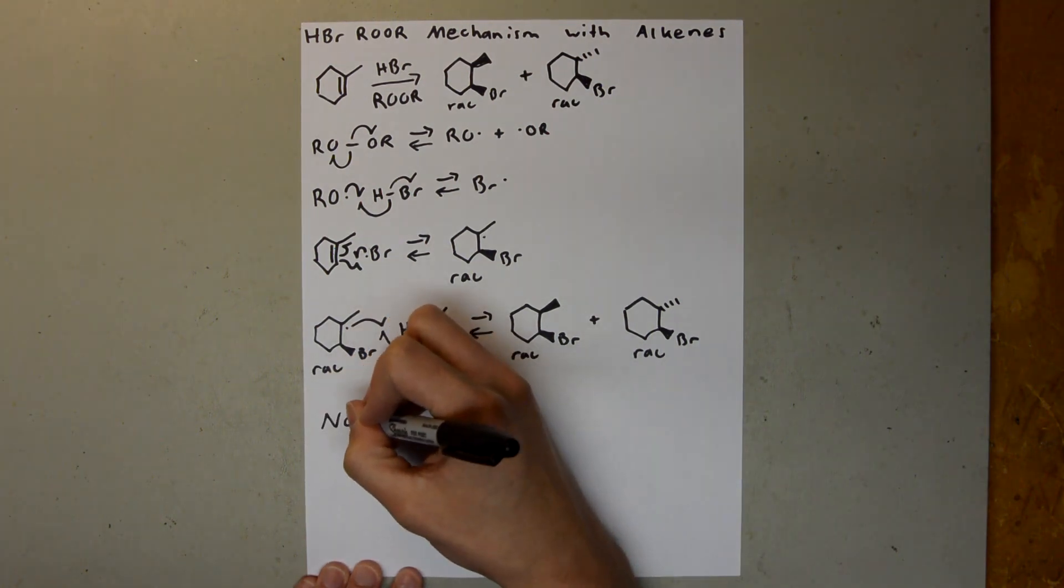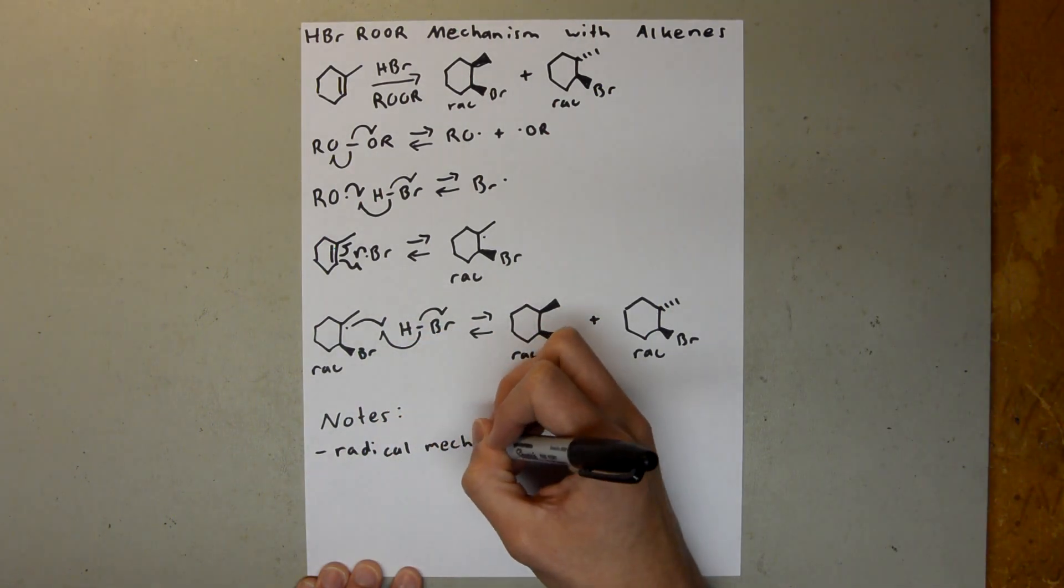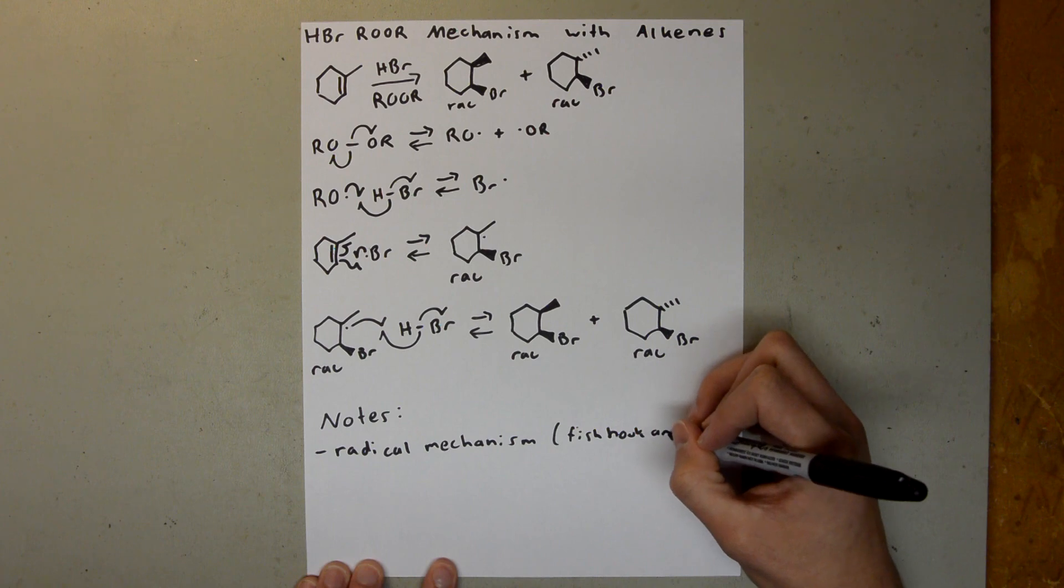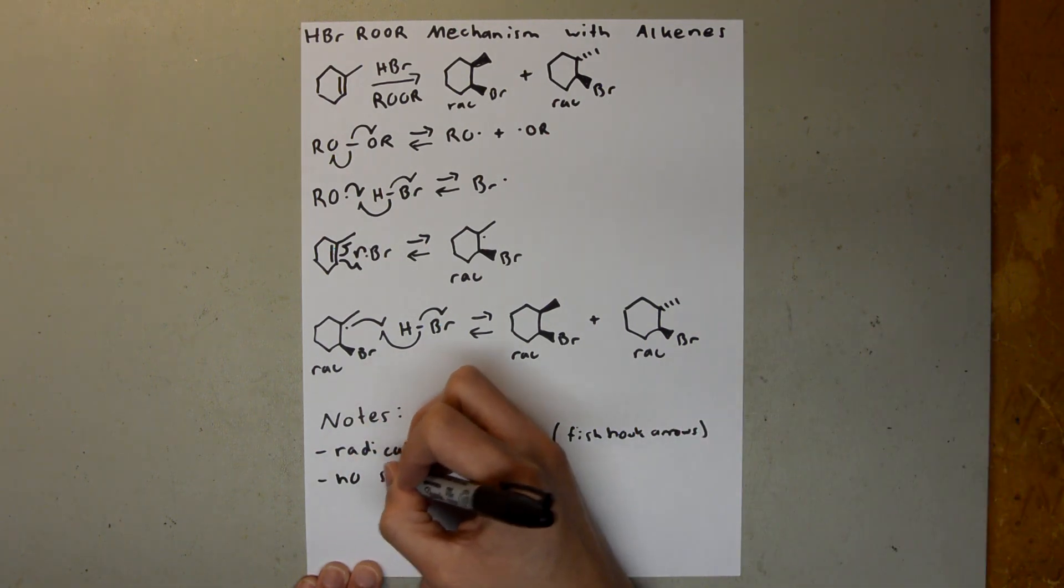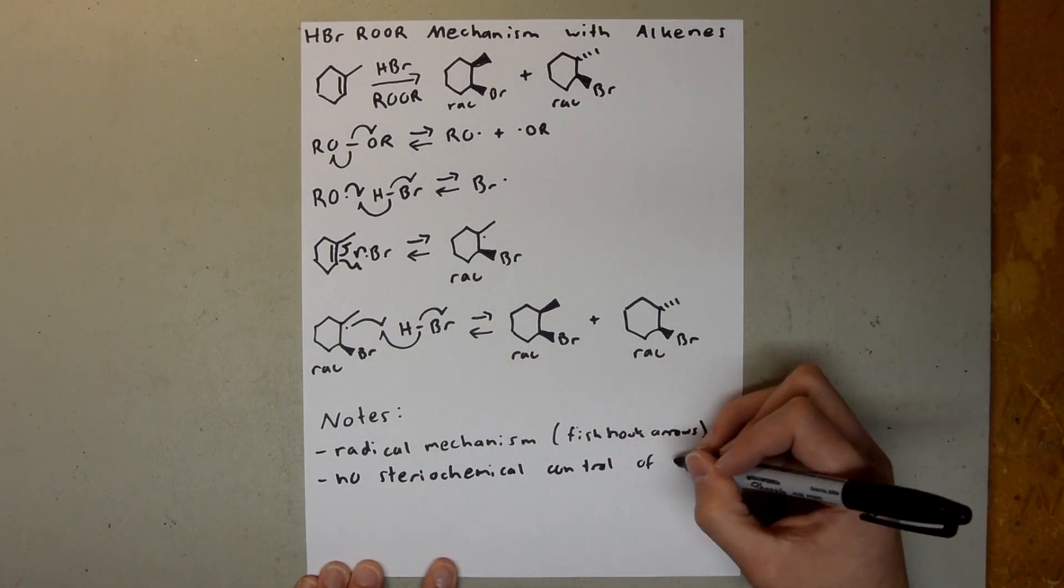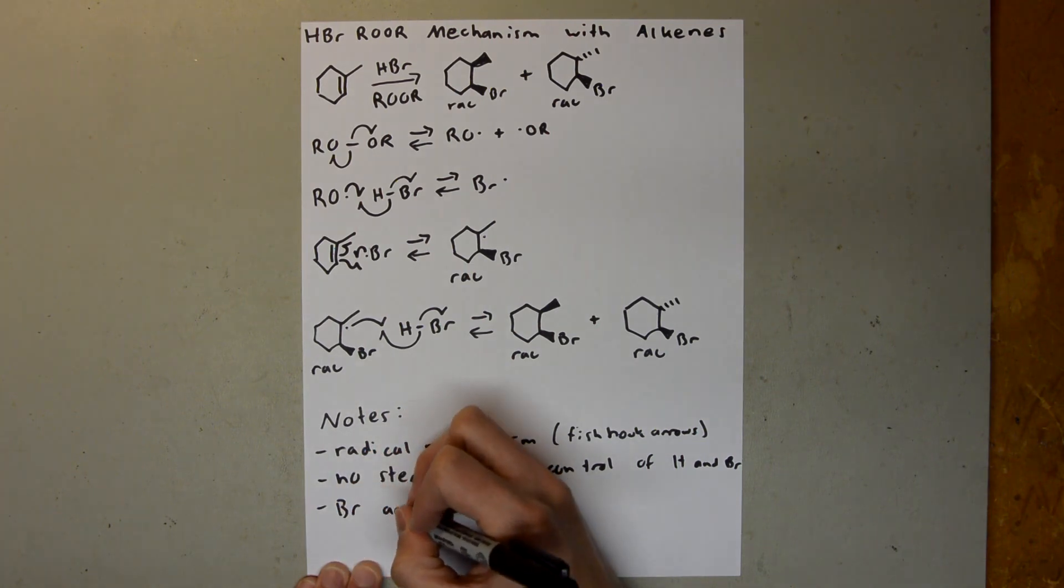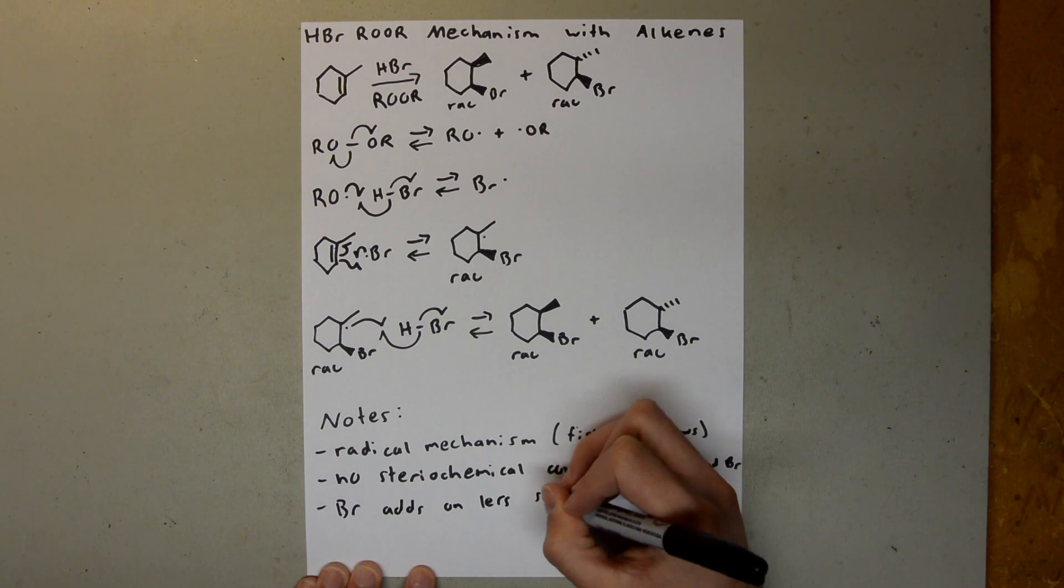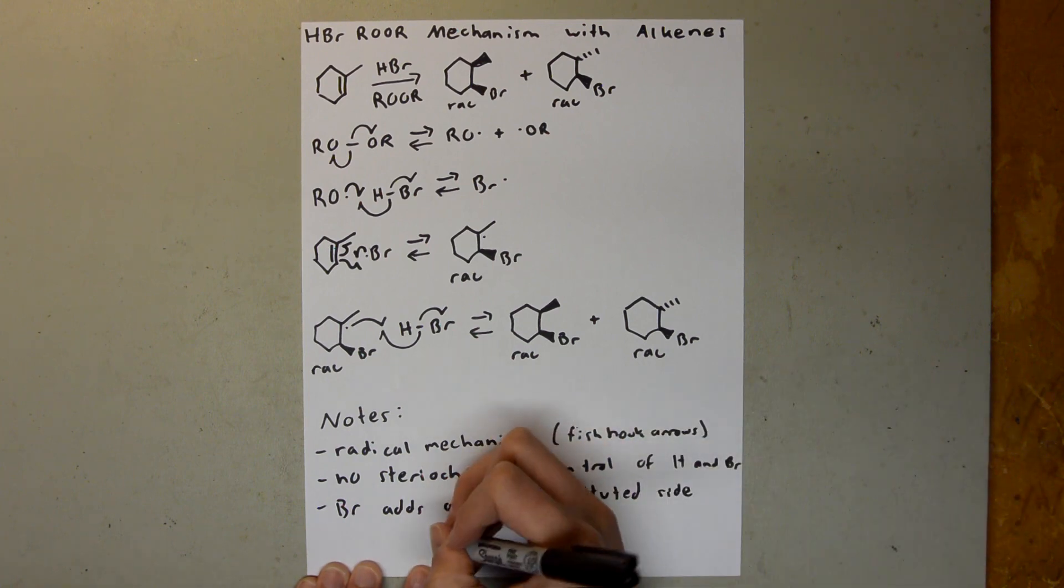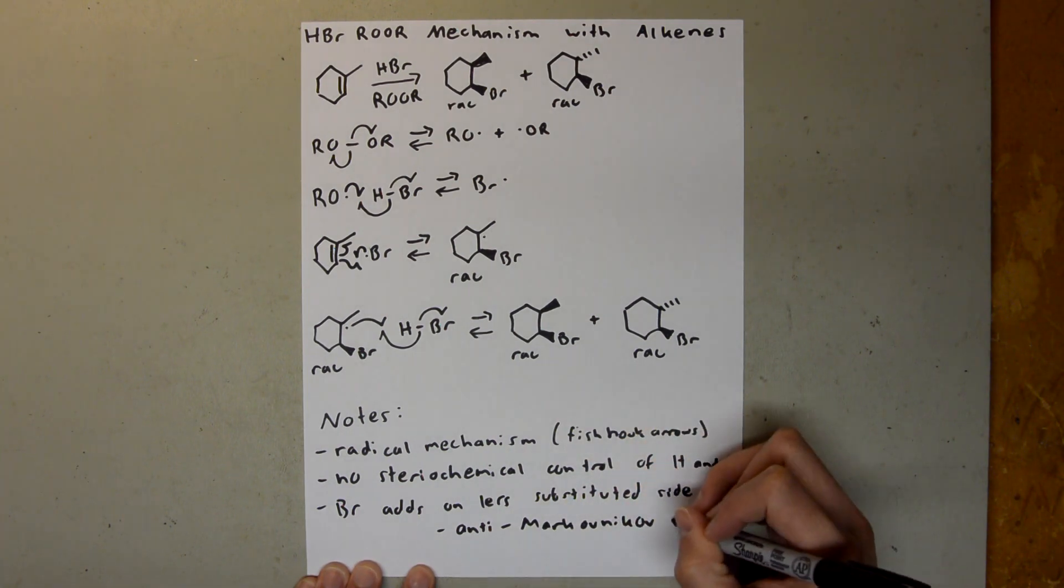So a couple notes on this mechanism. It is a radical mechanism, so we use fishhook arrows. We have no stereochemical control of H and Br, and the Br adds on the less substituted side, also known as anti-Markovnikov addition.